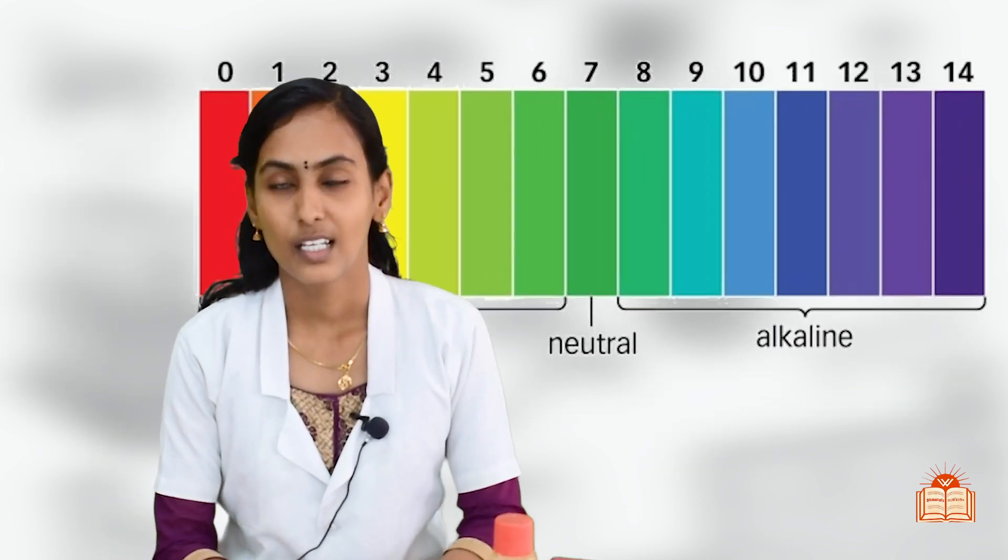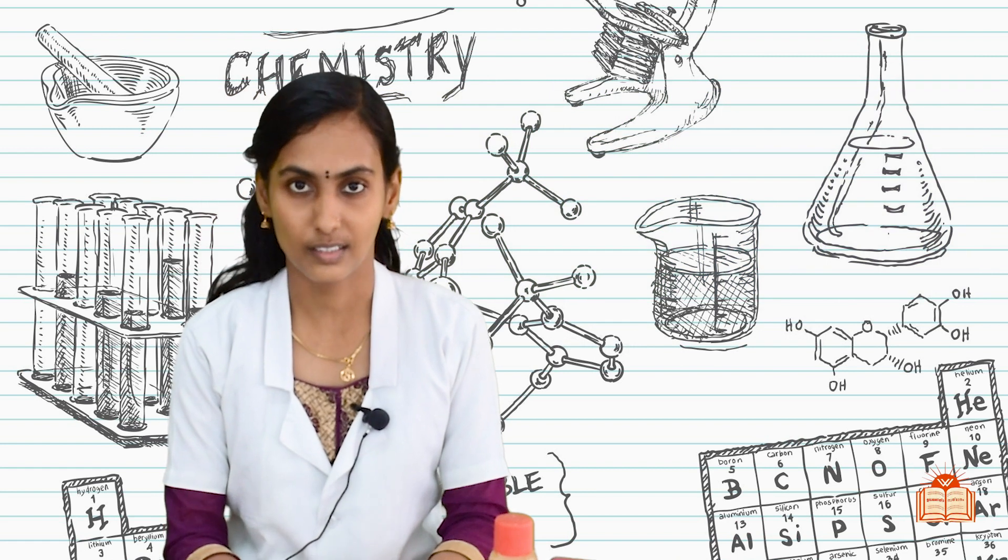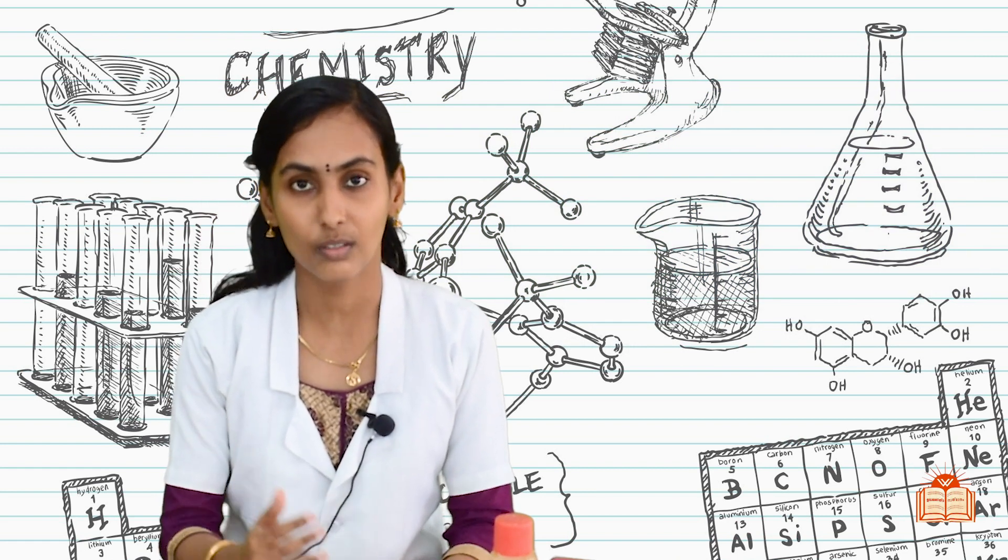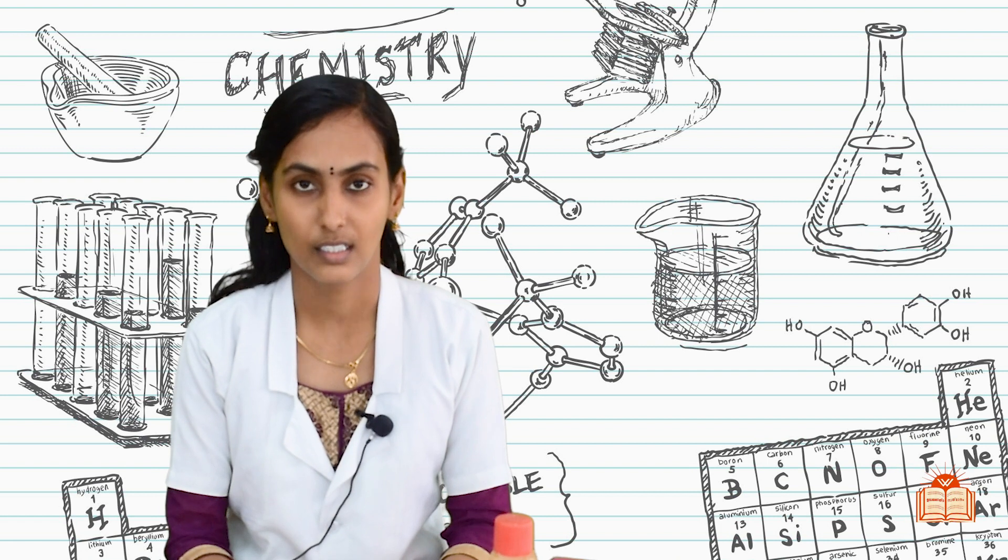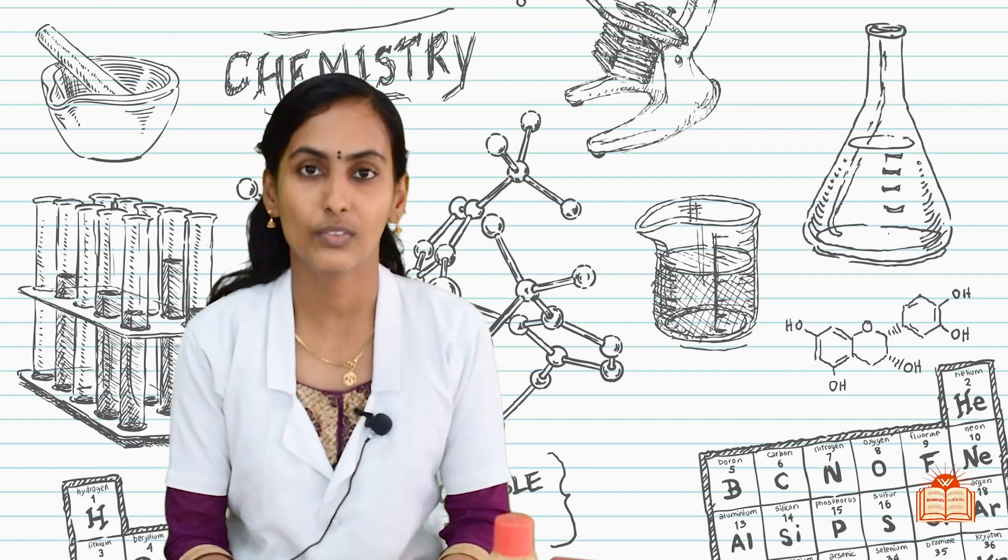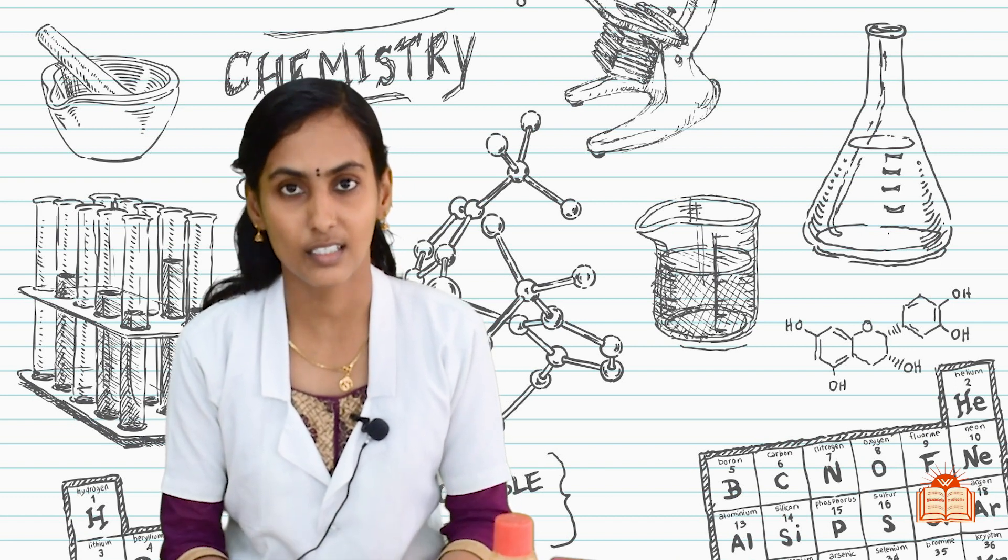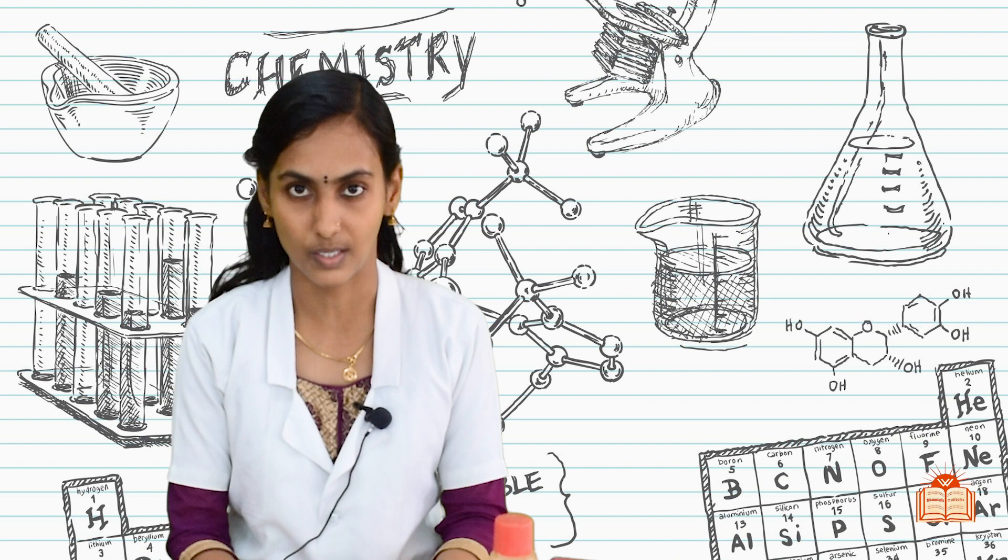pH is actually defined as the negative logarithm of hydrogen ion concentration. If hydrogen ion concentration is more, then the pH value will be less. If hydrogen ion concentration is very less, then the pH value will be very high. That is the relationship between the hydrogen ion concentration and pH value.